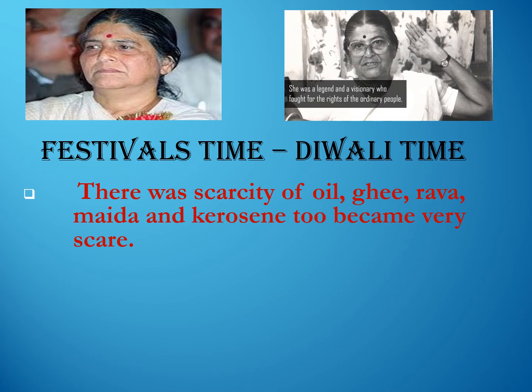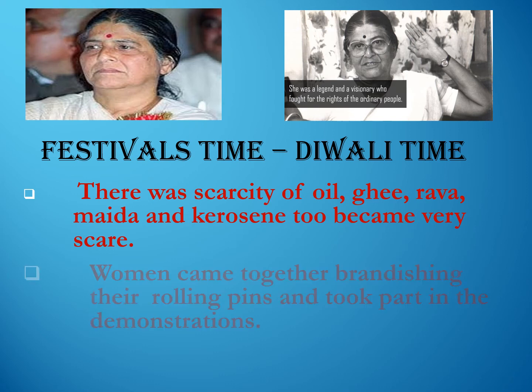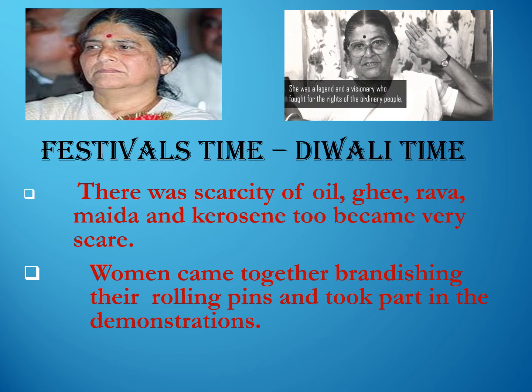During Diwali, commodities like oil, ghee, rava and maida became scarce just as the festival was near at hand, and kerosene had become very expensive. Women came together brandishing — that is, raising — their rolling pins and took part in the demonstration. This movement met with success, and the public got a glimpse of the united power of women. By this movement, the women gained united strength and were successful.